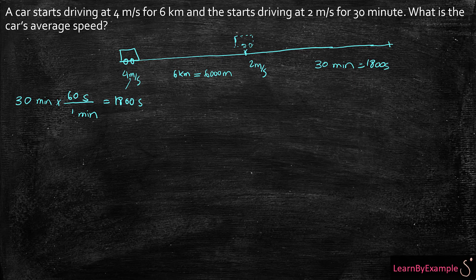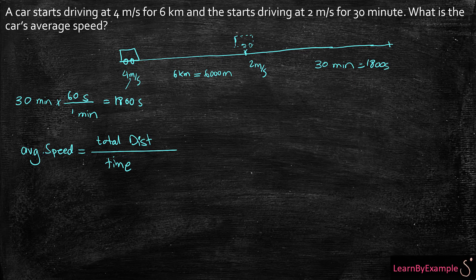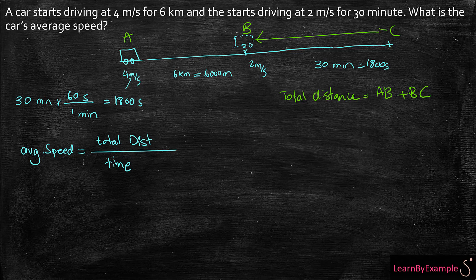The first thing I want to do is find the average speed. Average speed, as I had in my formula, is the total distance over the total time. So first I need to find what my total distance is and what my total time is. I know from point A to point B is 6,000 meters, so my total distance is A to B plus B to C. What I don't know is the distance between B and C.